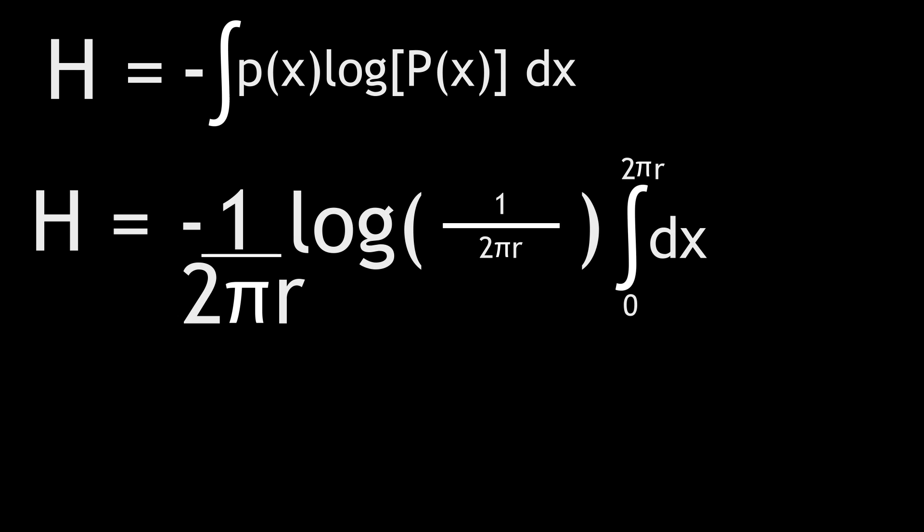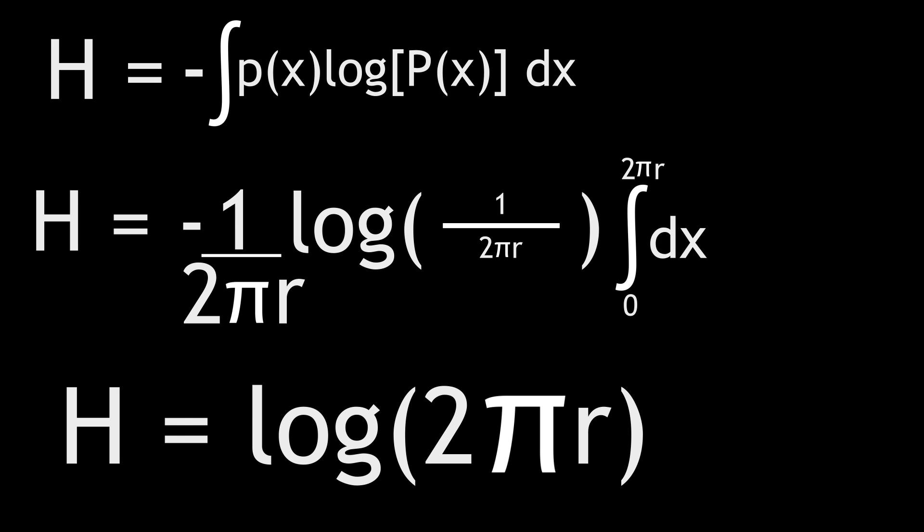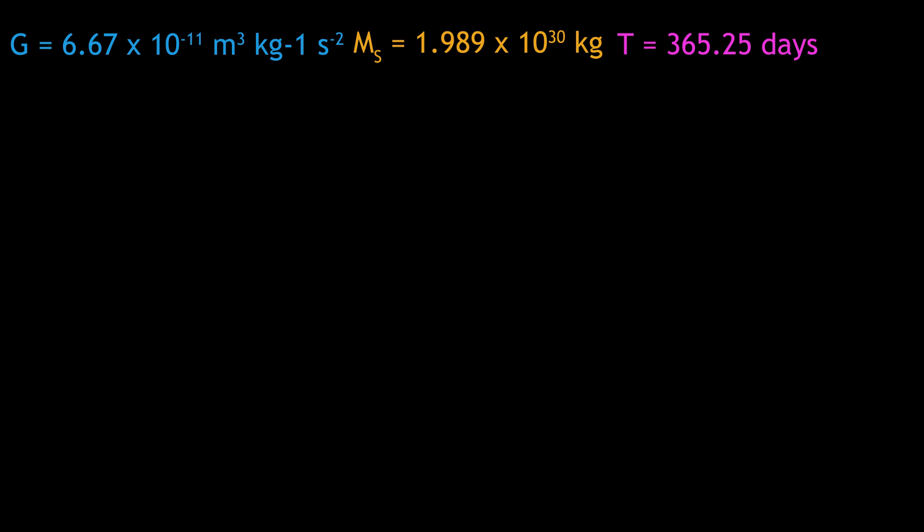Now that we have the probability density function, we can use Shannon's entropy formula for continuous distribution to find the number of bits of information contained in the orbit. Since p is equal to 1 over 2 pi r, which is constant, p times log p is also a constant, so we can pull it out of the integral. We then integrate and cancel the 2 pi r's, and we just get that H is equal to the log base 2 of 2 pi r. And since we have a formula for r, we can calculate 2 pi r.